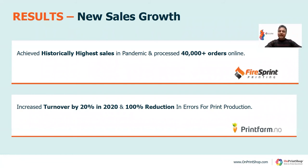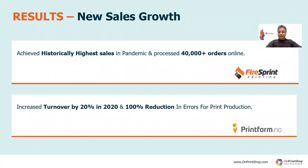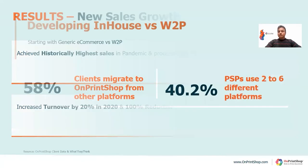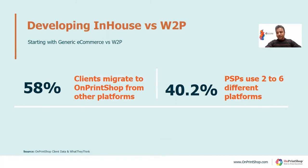Printfarm from Norway mentioned that the complete Norway print industry was down in 2020, but their turnover was positive at 20 percent in 2020. They also achieved a benefit in operation cost in terms of 100 percent reduction in errors for print production. They achieved huge ROI, especially in new sales as well as operation savings.